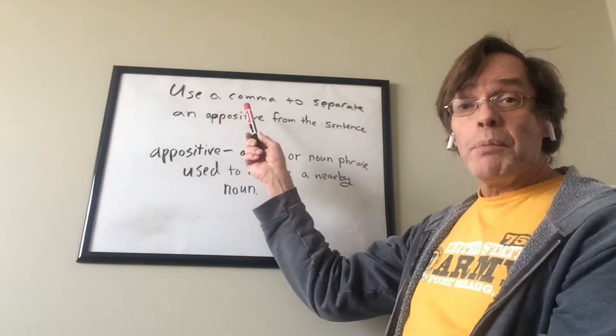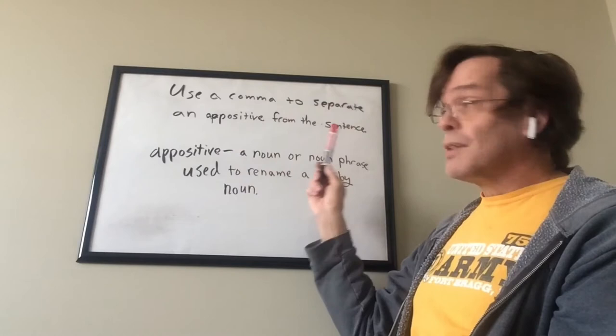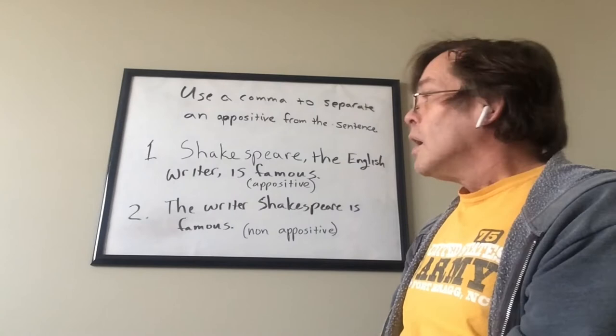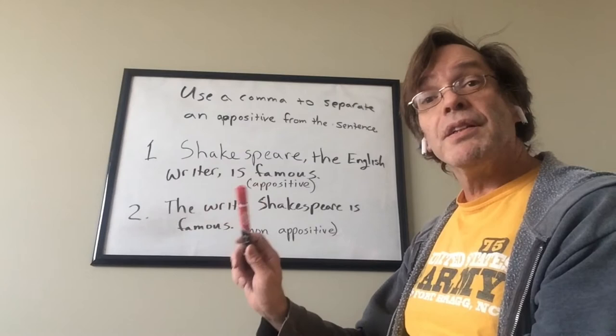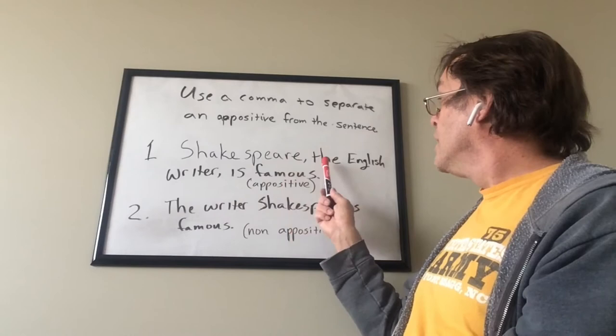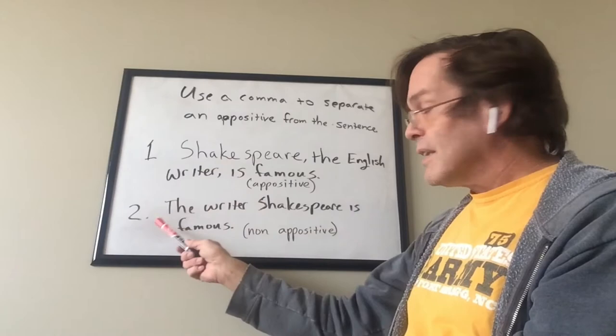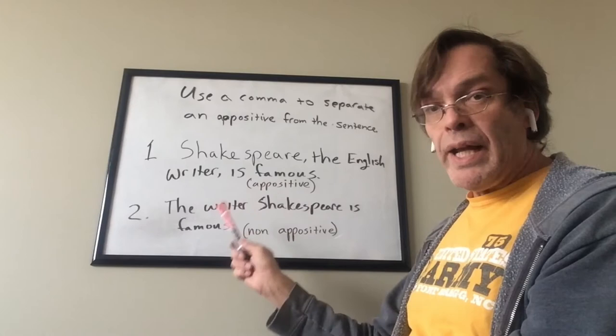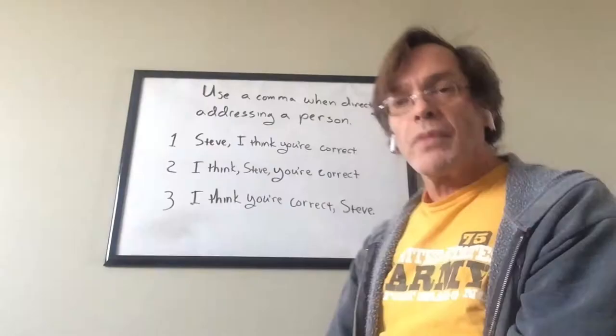Another way to use commas is to separate an appositive from the sentence. An appositive is a noun or noun phrase used to rename a nearby noun. For example: 'Shakespeare, the English writer, is famous.' Here 'the English writer' is renaming Shakespeare — that's an appositive. In contrast, 'The writer Shakespeare is famous' is non-appositive because Shakespeare is not being renamed in this sentence.